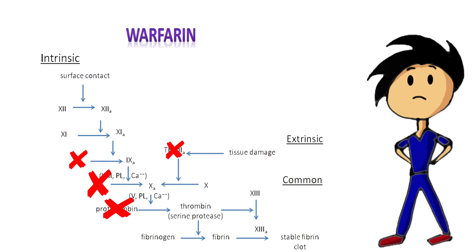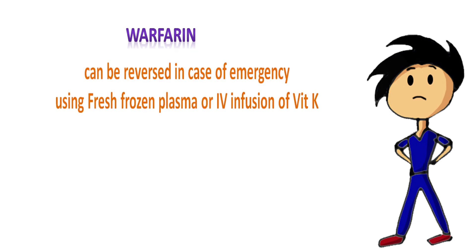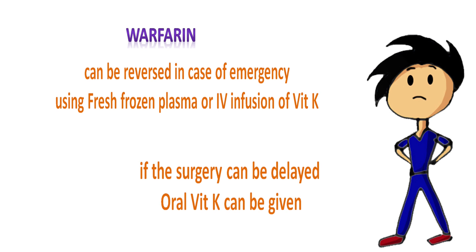The effect of warfarin is better reflected in prothrombin time, or to be precise, INR. The effect of warfarin is not predictable from dosage alone and INR needs to be checked periodically to ensure the patient is in the therapeutic window. Patients under warfarin are typically kept in an INR range of 2–3. The effect of warfarin can be reversed in emergencies using fresh frozen plasma or IV infusion of vitamin K. If surgery can be delayed, oral vitamin K can be given.